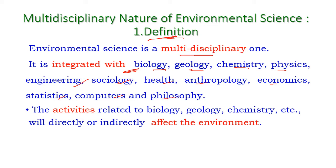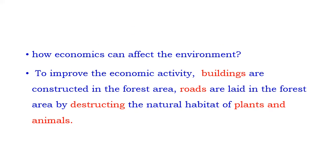The various activities related to these subjects — biology, geology, chemistry, and all the others — will directly or indirectly affect the environment. For example, to improve the economic activity of our society, state, or nation, various buildings are constructed and roads are laid in forest areas, destroying the natural habitat of plants and animals.